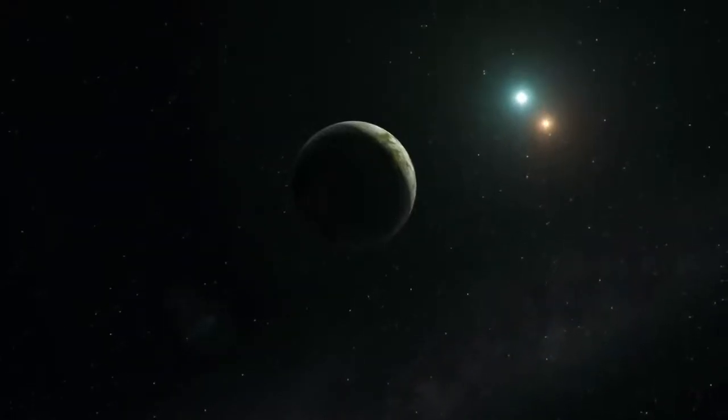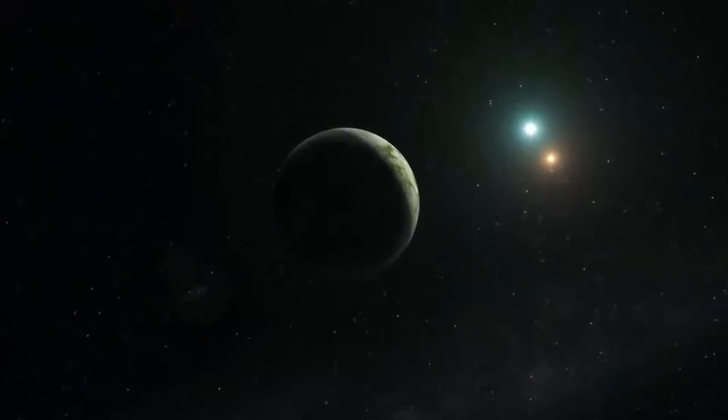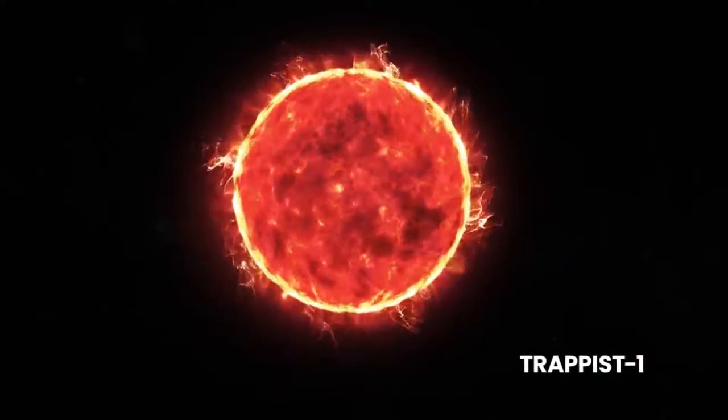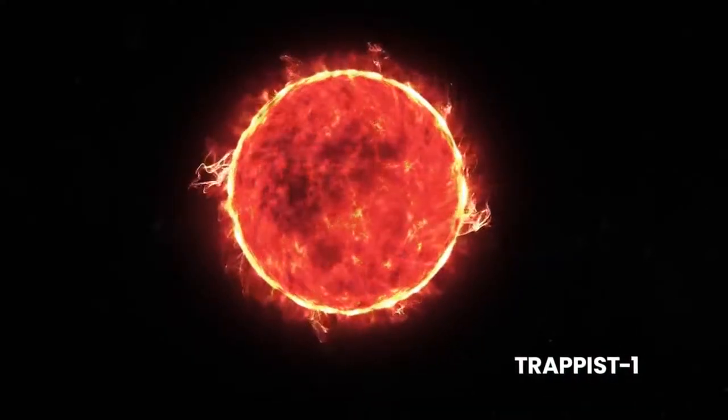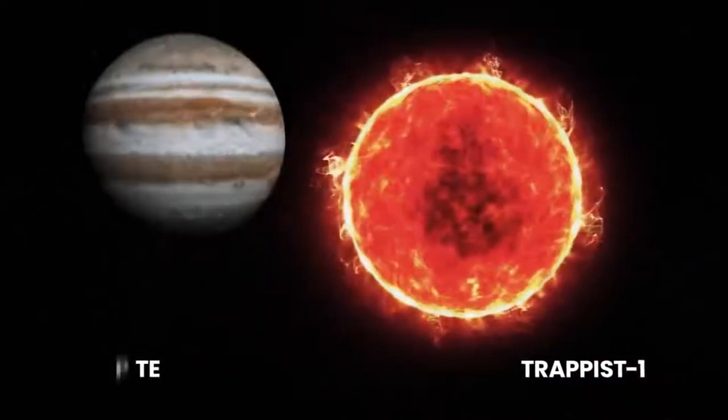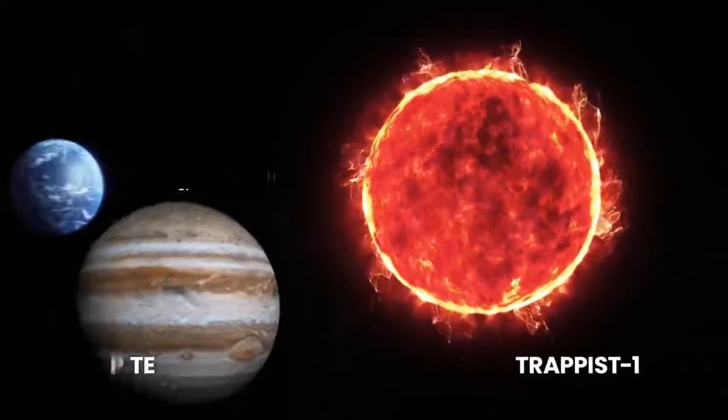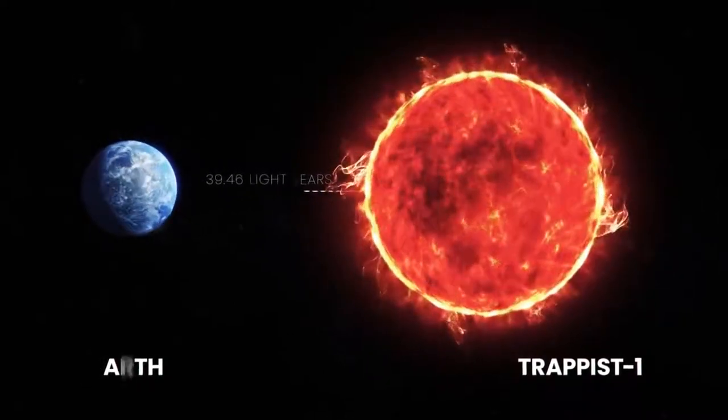But don't give up hope on us finding a super-Earth just yet. First discovered in 1999, Trappist-1 is an ultra-cool red dwarf star with a radius slightly larger than Jupiter and lies about 39.46 light-years away from Earth.